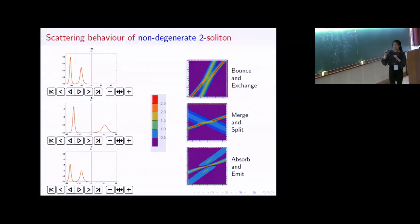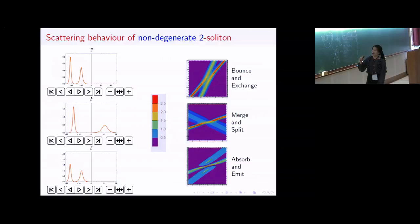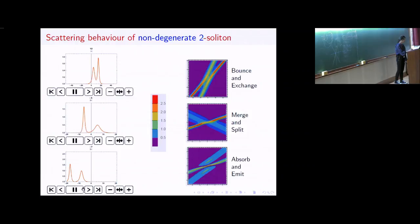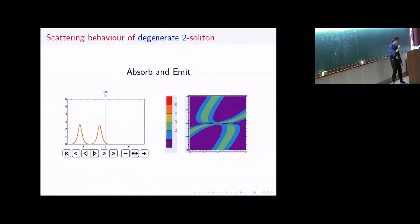We can also obtain non-degenerate multi-solitons with the Darboux-Crum transformation. For non-degenerate two-soliton solutions, we have three different types of scattering behavior: the first is bounce and exchange, the second is merge and split, and the third is absorb and emit. However, for the degenerate two-soliton we only found one type of scattering behavior: absorb and emit.